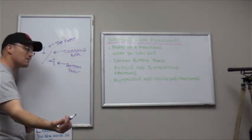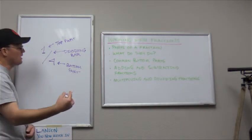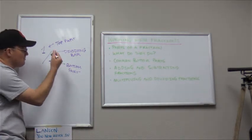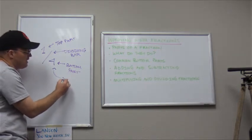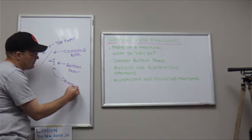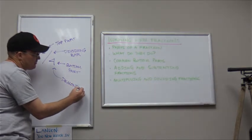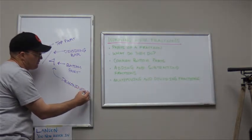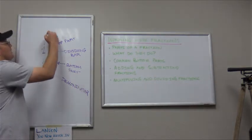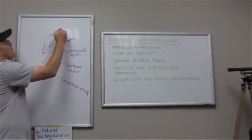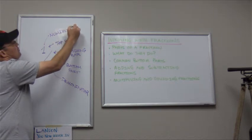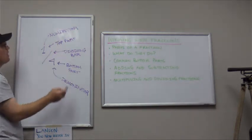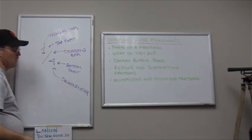Mathematicians like to make stuff hard, so they've got to come up with names that make them sound smart. Mathematicians call the bottom part the denominator — it sounds like some kind of sci-fi movie with robots from the future. The top part is called the numerator. So: denominator, numerator. I just like top part, bottom part, dividing bar.